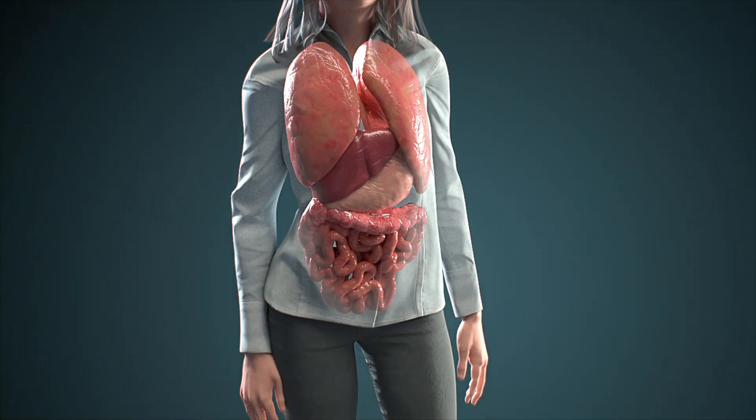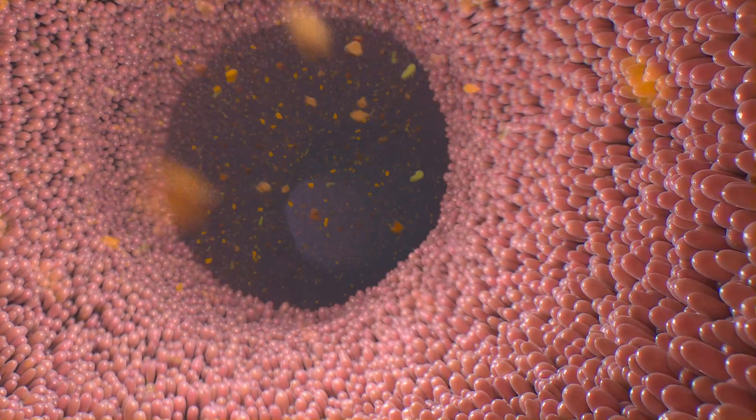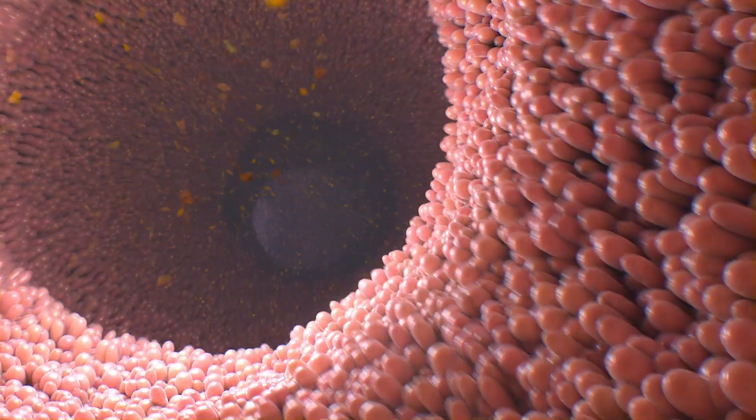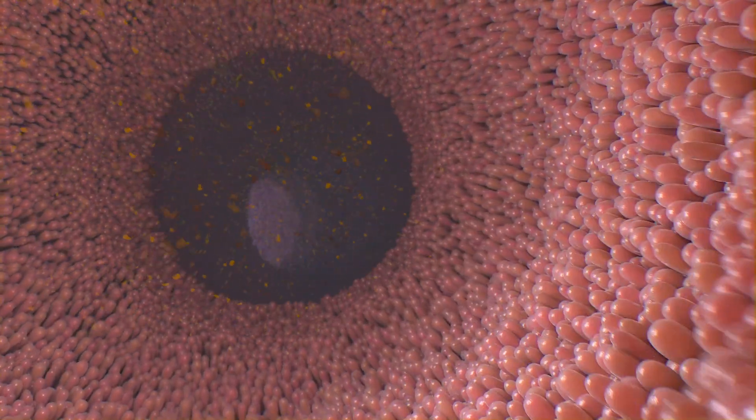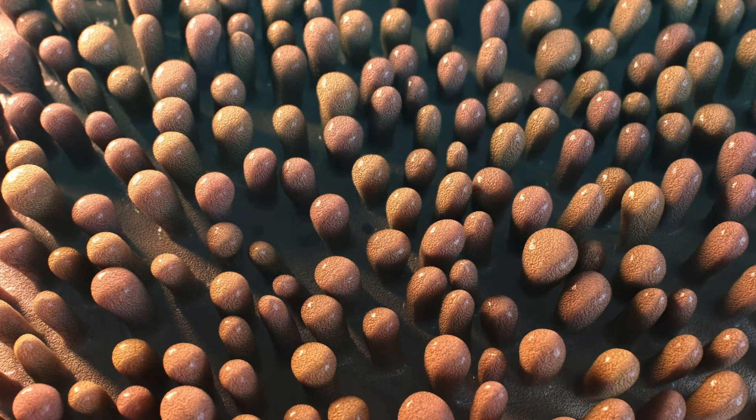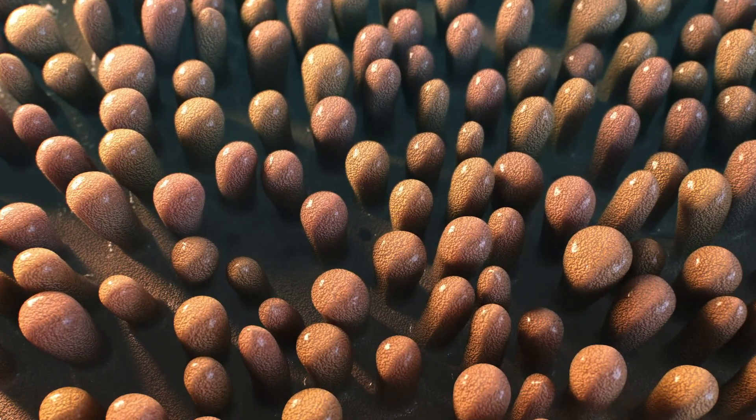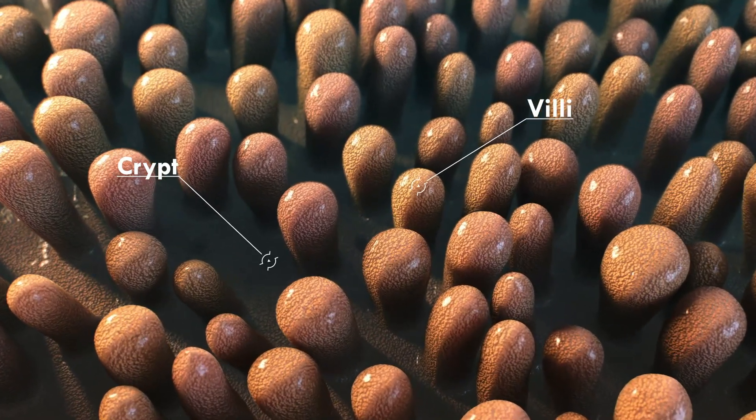The small intestine is a hollow, tube-shaped organ in our digestive system. The large inner surface of the intestine is lined by tissue called epithelium, composed of tiny bumps and cavities named villi and crypts.